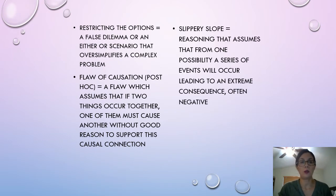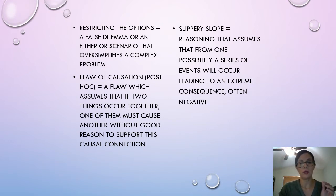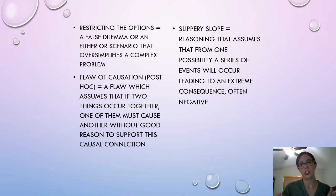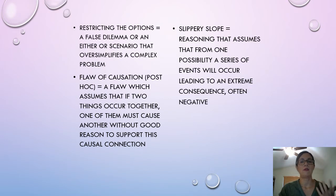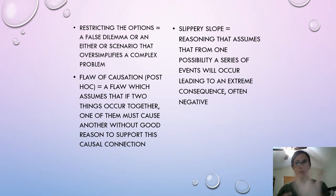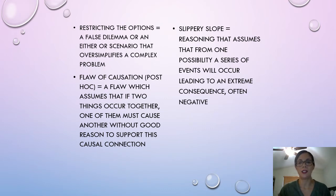Then you have slippery slope, which is kind of like flaw of causation but really extreme. It takes one possibility and gives a series of events that will occur in a very negative, extreme consequence. For example: 'If we pass this bill, there will be an economic downturn, then people will start rioting in the streets, and our government will end as we know it.' So that's a really harsh, severe consequence because of one event.